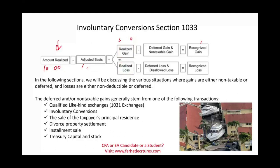In the prior session we looked at qualified like-kind exchanges, Section 1031. In this session we look at involuntary conversion. As I am preparing this recording, Hurricane Ian is hitting Florida, and this picture is from Florida. It's an involuntary conversion — the owner of this apartment building and the owners of this boat did not want this to happen. They lost their assets involuntarily.